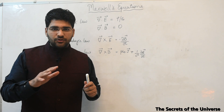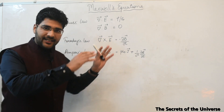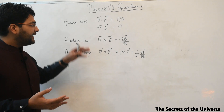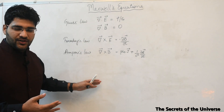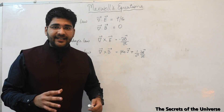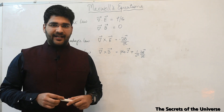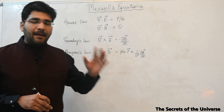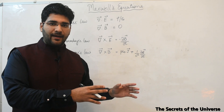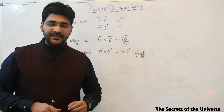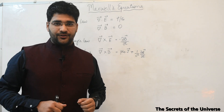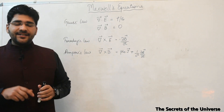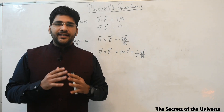This quote from Carl Sagan holds a lot of importance — it really tells how important these equations are. One thing to be noted is that Maxwell did not come up with these equations himself. He did not devise all of them; he just combined these four equations and proved that light is actually an electromagnetic wave.